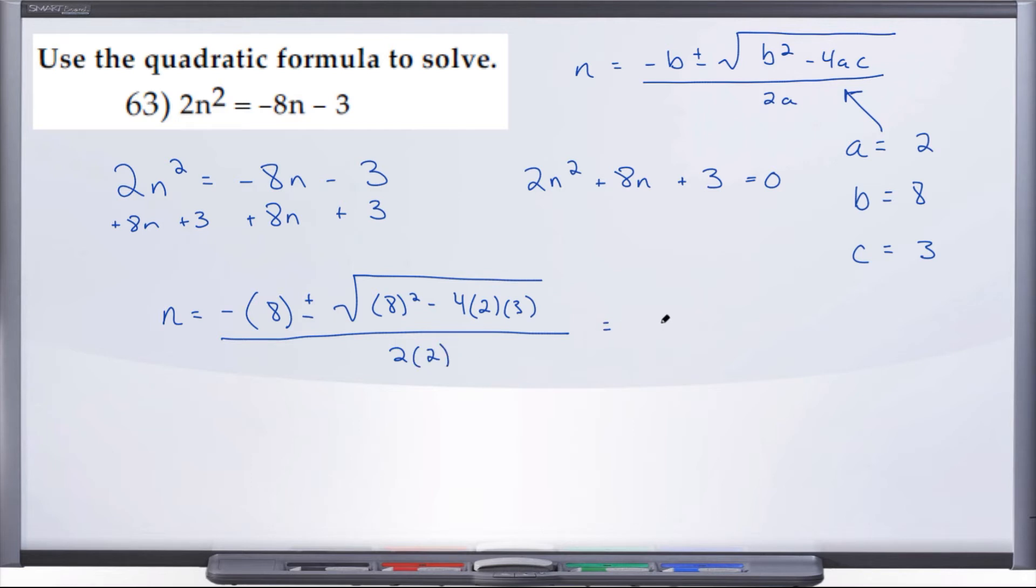So what we end up with now is (-8 ± √...). What is 8²? 64. And here we have 2 × 3 is 6, 6 × -4 is -24, all over 2 × 2 is 4.